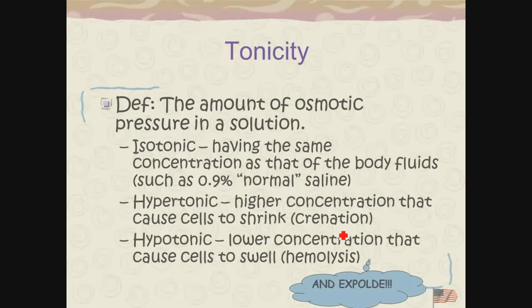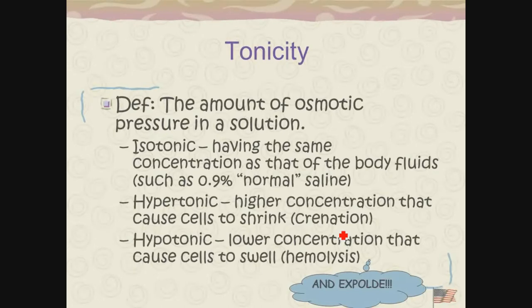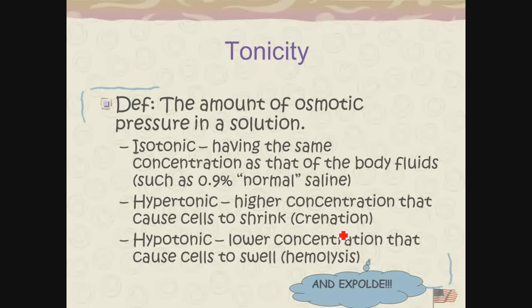We're going to call this tonicity — basically how close the concentration of a fluid is to that of the body. The body has a natural concentration of 0.9% saline, called normal saline. If I have a tonicity higher than 0.9% — say a 2% or 3% solution — and I apply that to cells, the cells will attempt to equilibrate with that 2% solution by moving water out of the cell into the solution. In that sense, the cell shrinks. We call that crenation.